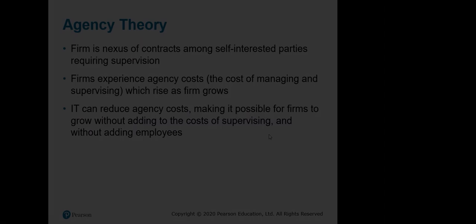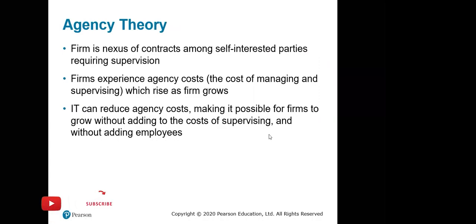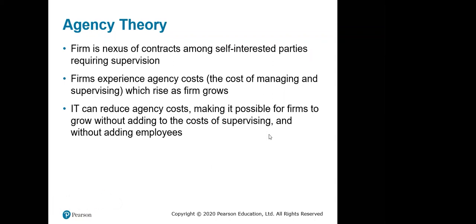Agency theory describes the relationship between the agent, who is hired by the shareholders, and the principals, who are the chief executive and people who manage the company. It shows the problems that can happen, for example when there is a conflict of interest — if the agent wants short-term income and the principal wants to expand the company, there can be problems.